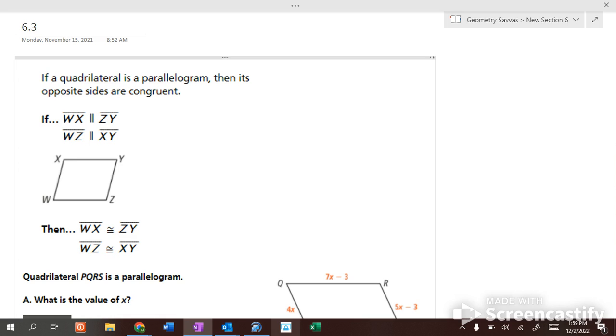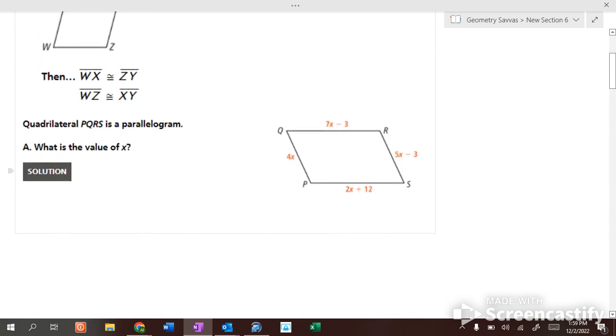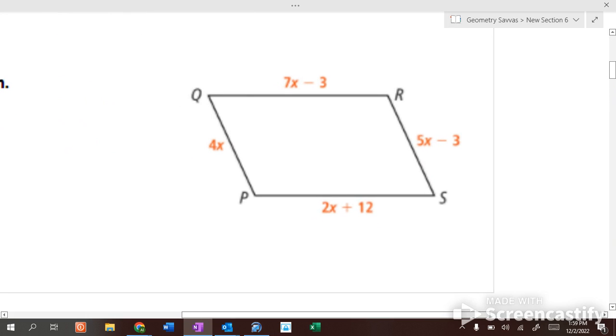First one on the board here. If it's a parallelogram, then opposite sides are congruent. So if opposite sides are congruent, how do we figure out what x is? What would you do? 4x equals 5x minus 3. Solve it.